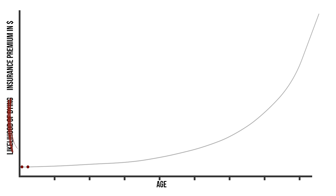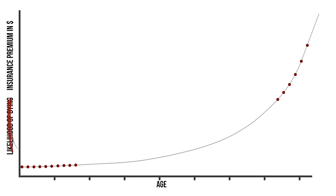So what this means is that if you were repeatedly buying a one-year life insurance policy, the price would go up every single year, and later in life, it would become unaffordable. And this change in cost doesn't really get dramatic until later on in life.